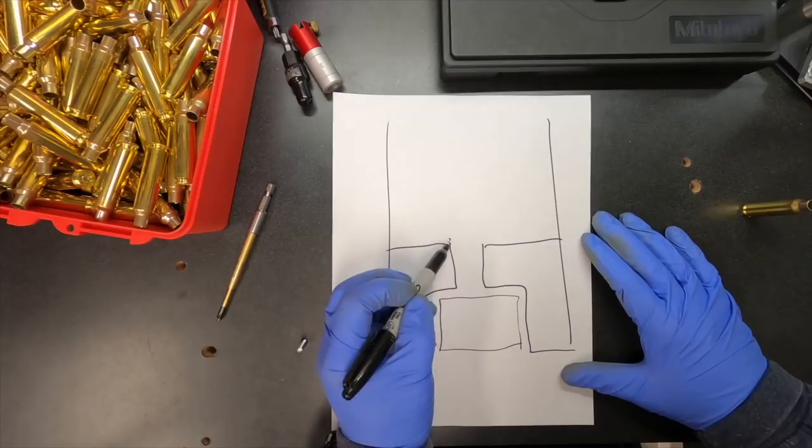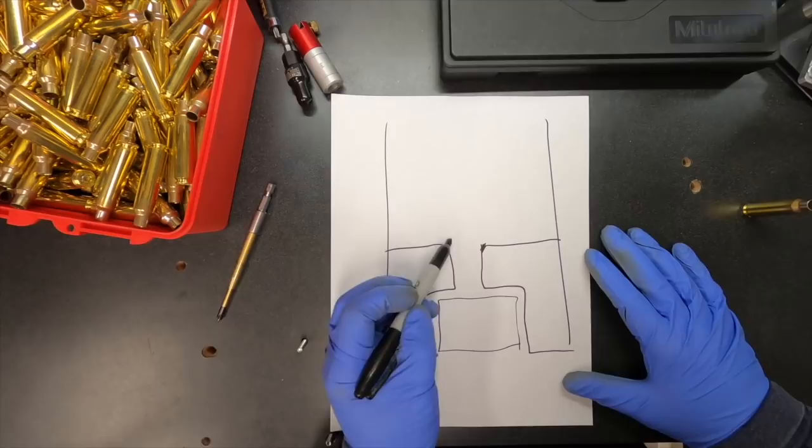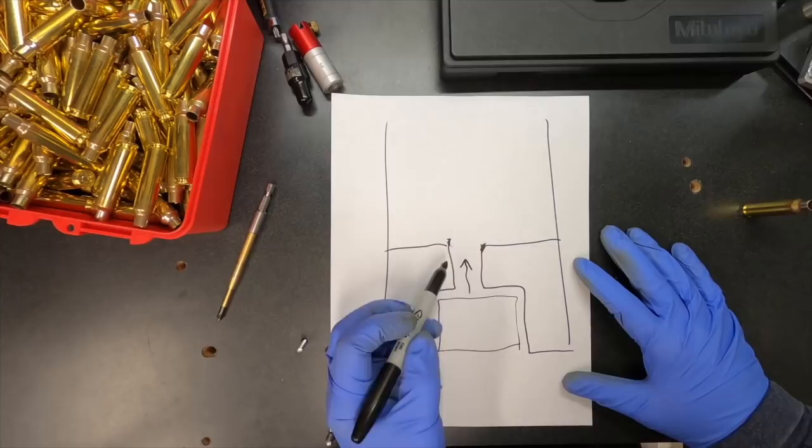But you end up with inconsistencies. It might be more beveled on one side and a little bit erratic here. And all I want to do is just make sure that when that flash comes through, it has sort of this perfect ability to cone out.